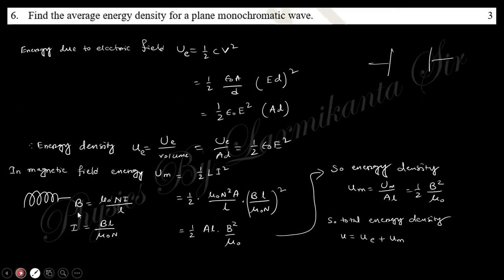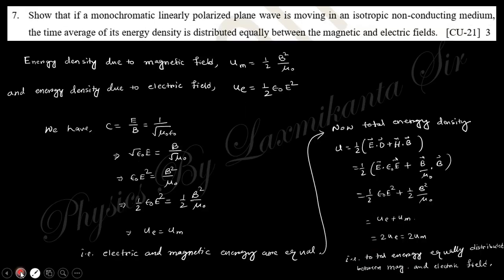Next: Find the average energy density for a plane monochromatic wave. In case of electric field, the energy is half C V squared because in the capacitor this is half C V squared. C is epsilon A by d, this is parallel plane capacitance, and V is E times d. You know E equals V by d, so V equals this. Energy density divided by volume, so half epsilon E squared. In case of magnetic field, energy is half L I squared. L is this one and I is this one, because in magnetic field the energy is this. So energy density will be this one. So the total energy is this one. Here you know this relation which says that these two are equal, so total energy is equally distributed.